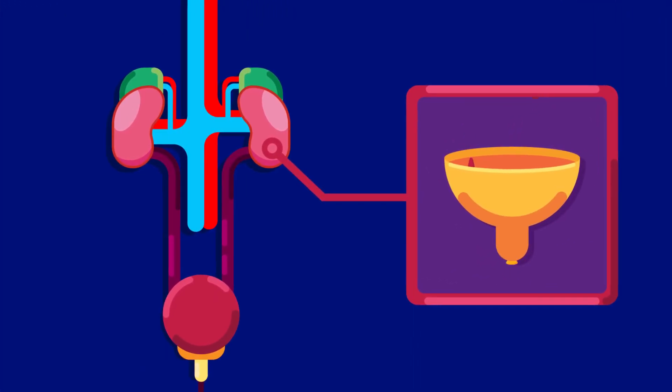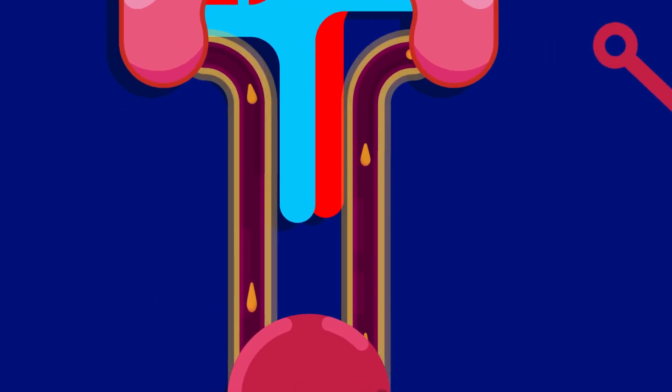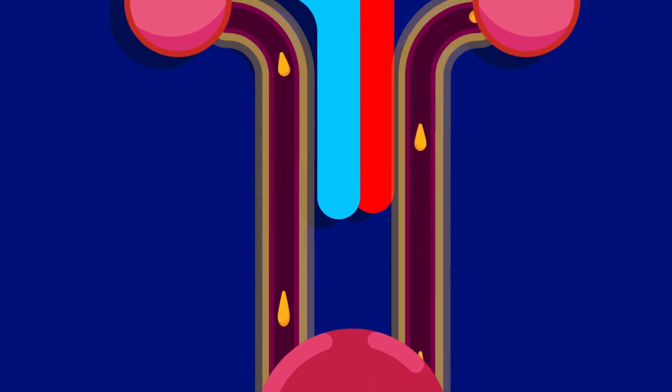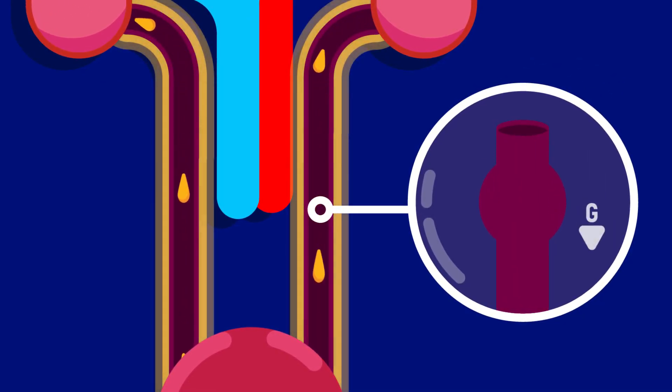The kidney filters blood and excretes the waste as urine. Ureta is the tube that transports urine from the kidney to the urinary bladder. It moves the urine through peristalsis and by gravity.